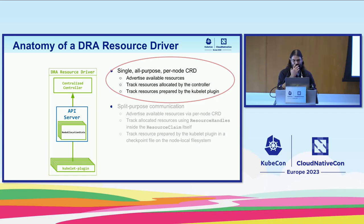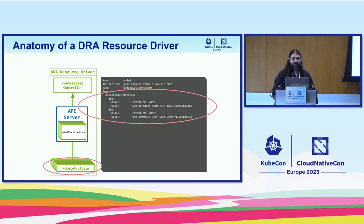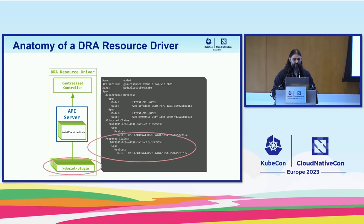Using the single all-purpose CRD approach: the kubelet plugin first comes online and advertises a set of allocatable devices. When the centralized controller is triggered to allocate, it picks one of those devices and writes information back to the CRD about which GPU was allocated to a specific claim. Once the kubelet plugin prepares the claim for use, it also writes back to the CRD confirming that it has prepared it before it gets passed to the starting container.